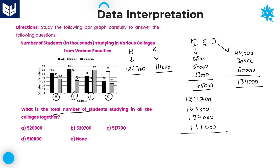Add all four values together. Units and tens places are 0. Hundreds place: 7. Thousands place: 7+5=12, 12+4=16, 16+1=17 — carry 1. Next: 1+2=3, 3+4=7, 7+3=10, 10+1=11 — carry 1. Counting up: 5. The total is 5,17,700. Option C is the right answer.